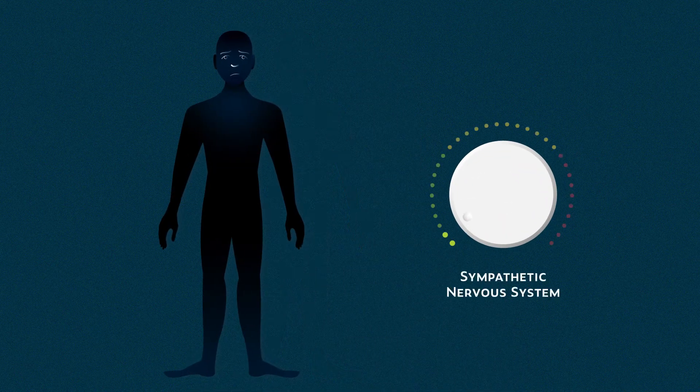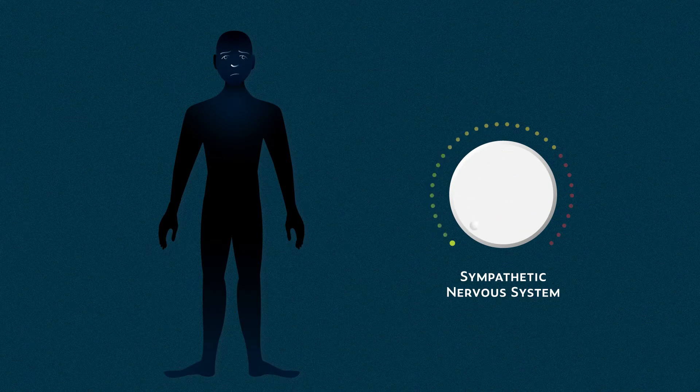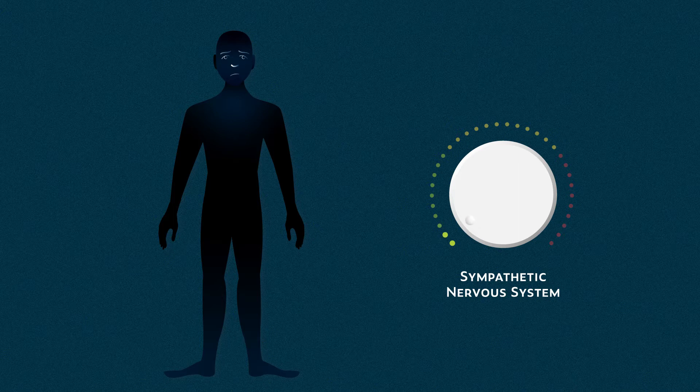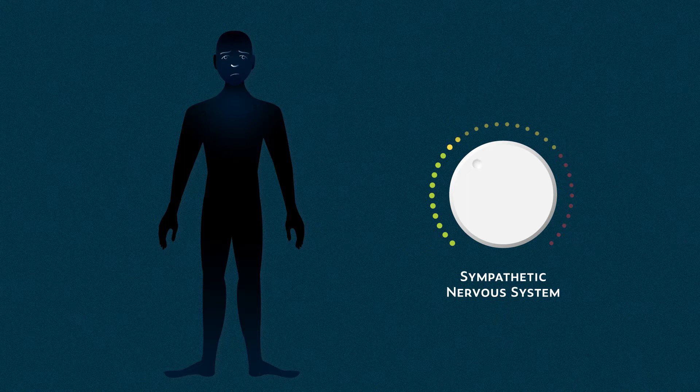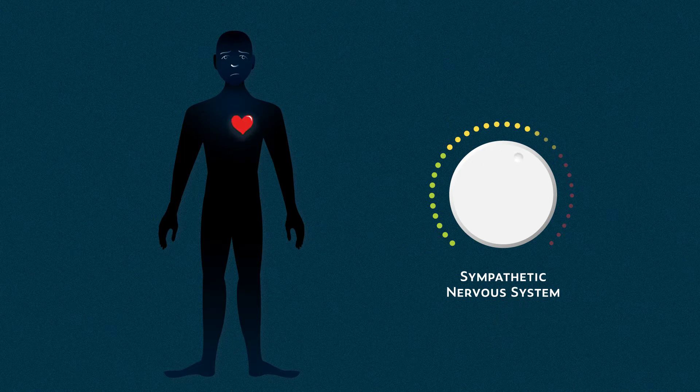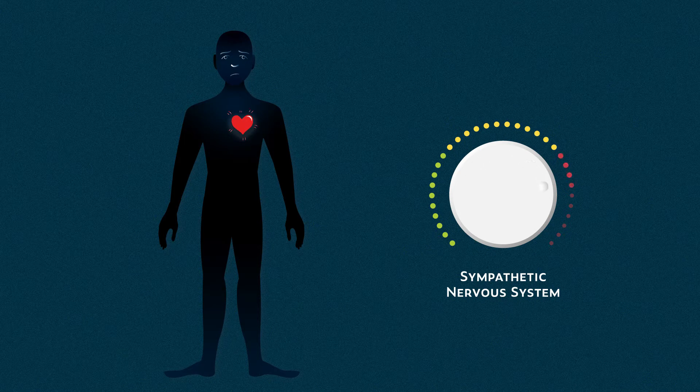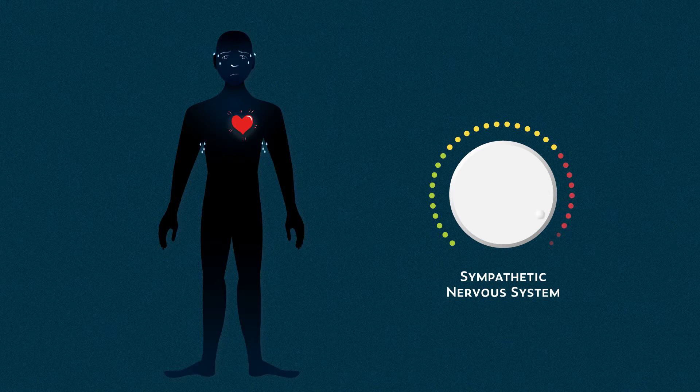Most of us are pretty familiar with how stress can feel. Stress turns up the tone of your sympathetic nervous system relative to your parasympathetic. Over a period of seconds, your heart and respiratory rate rise. Sweat begins to drip from your forehead and underarms.